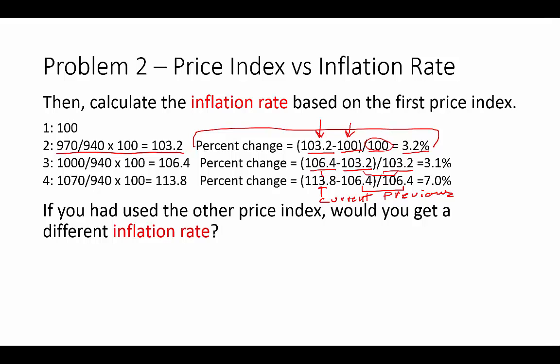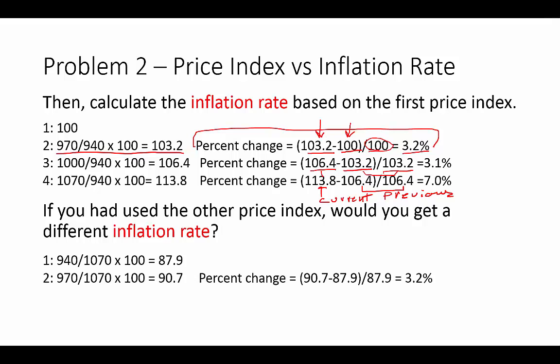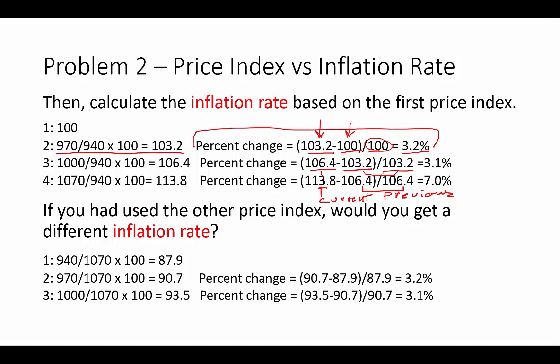The next question asks: if you had used the other price index — where year four is the base year — would you get a different inflation rate? Let's check. Moving from year one to year two using the year-four-based index, we get 3.2% — the same. Year three is the same. Year four is the same. So would you get a different inflation rate? No, you would not. The inflation rate is the same regardless of which base year you use for the index.